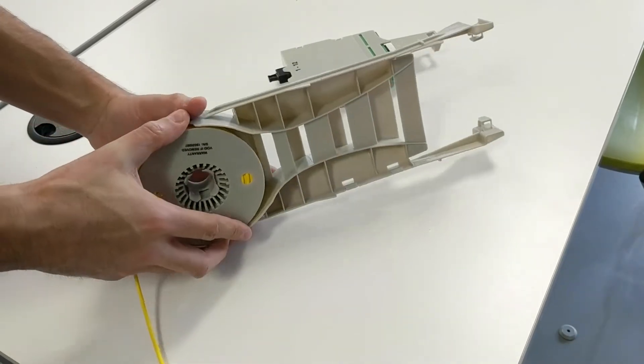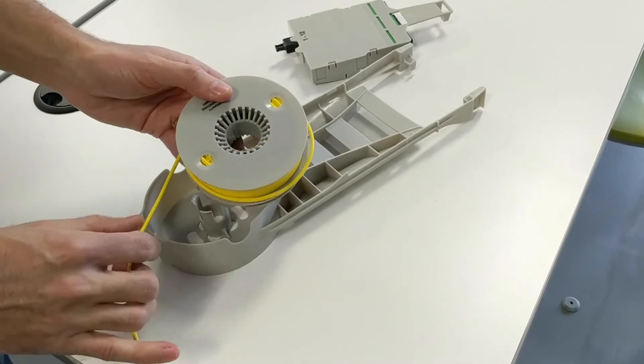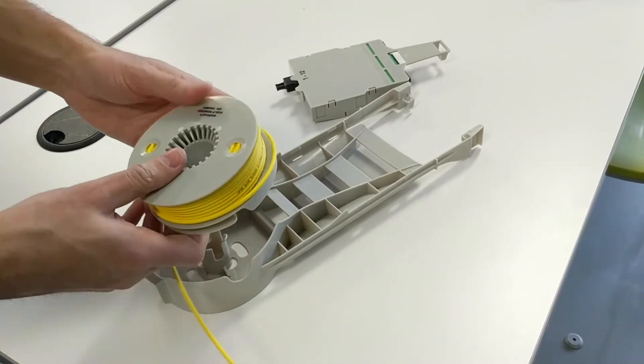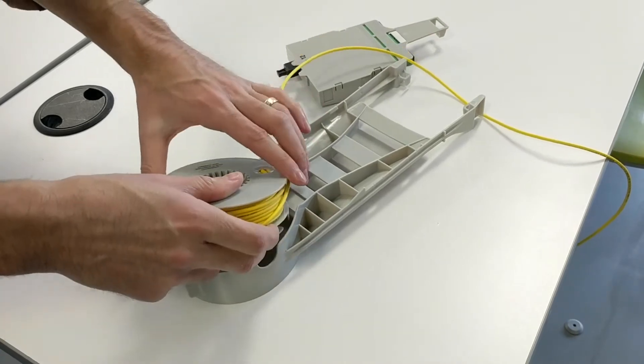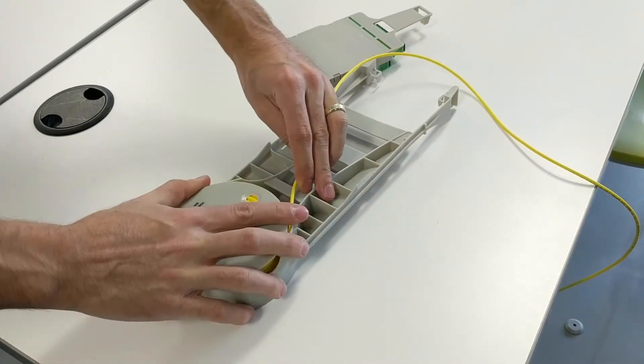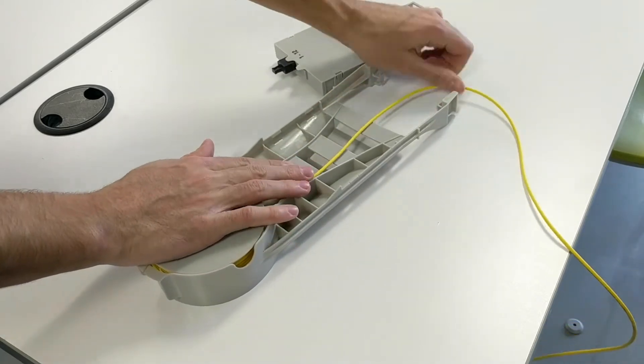Next, reinstall the flex spool but have the cable assembly use the front path of the module instead of the back. Now carefully secure the cable down with one hand using a bit of pressure to reattach the distribution module with the other.